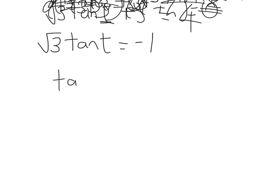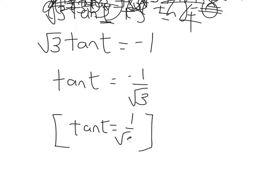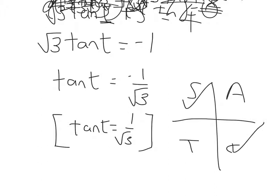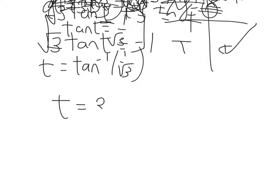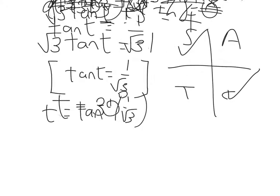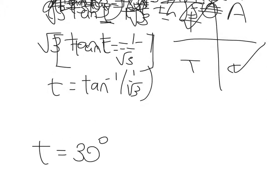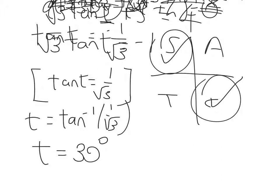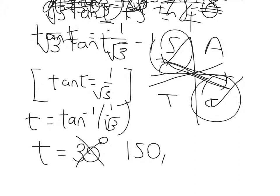Then tan t is equal to minus 1 over root 3. Our routine at that point is to change that negative result to a positive result. But instead of looking in the all-and-tan quadrant, because I've changed it from a negative to a positive result, I'm going to look in the sine and the cosine quadrant. So t will be equal to tan inverse of 1 over root 3, which gives me a value of 30 degrees. Remember the first answer you get will be the one in the all-quadrant, but I'm not looking there this time. In the sine quadrant, I'll take that away from 180 to get 150 degrees. And in the cosine quadrant, I'll take it away from 360 to give me 330 degrees.